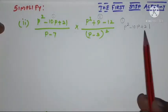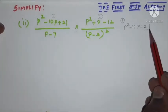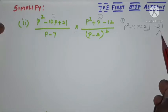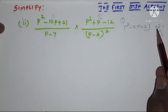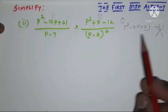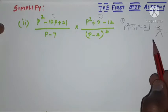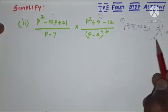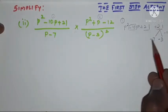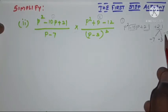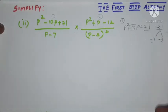We need to factorize this polynomial. The constant is plus 21 — that's very important. If I multiply two numbers, they should give plus 21, and if I add those two numbers, they should give minus 10. Minus 7 and minus 3 satisfy both: minus 7 times minus 3 is plus 21, and minus 7 plus minus 3 is minus 10.